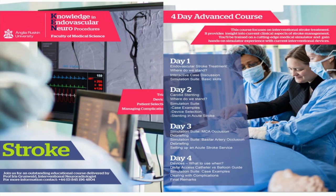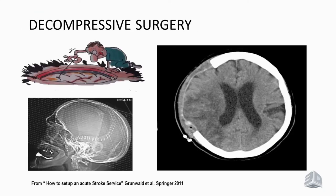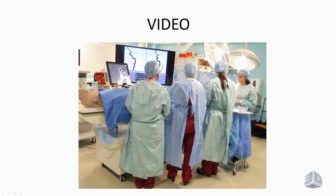The next step is post-acute care. Rehabilitation should start as soon as possible. We need to look for causes and risk factors of the stroke — every fourth stroke is caused by a stenosis of the carotid artery — and further medical management needs to be planned. In cases where a large stroke develops, patients need to be sent for decompressive surgery and that pathway also needs to be arranged.